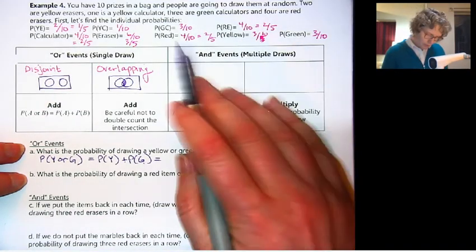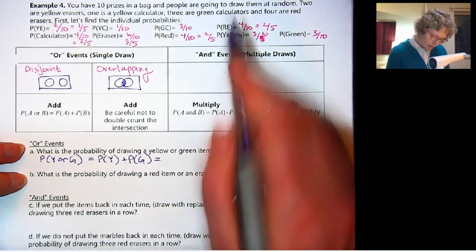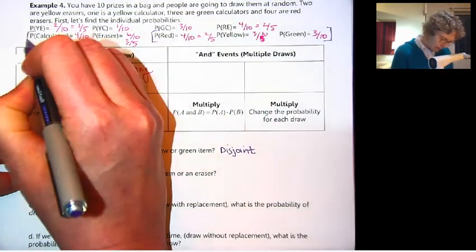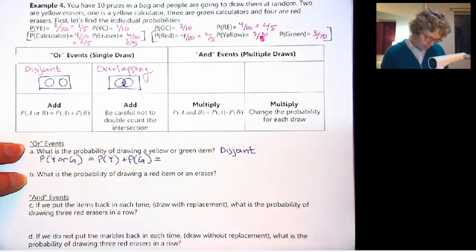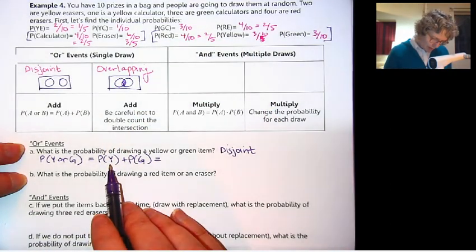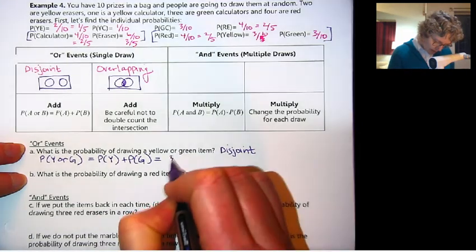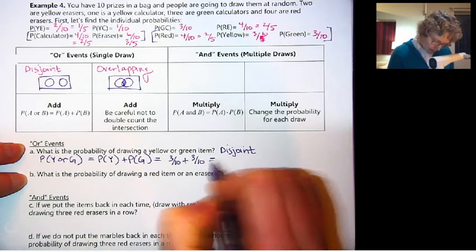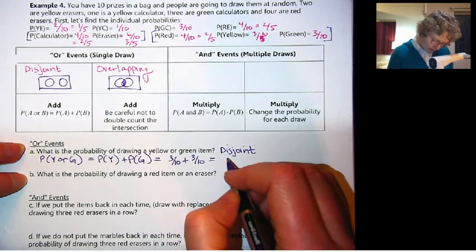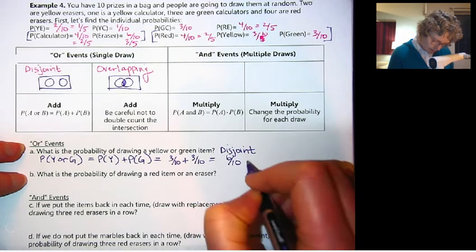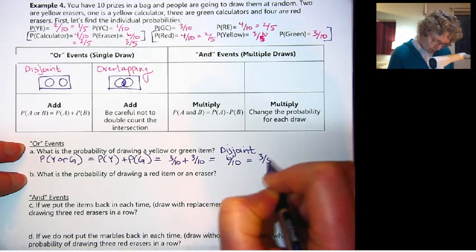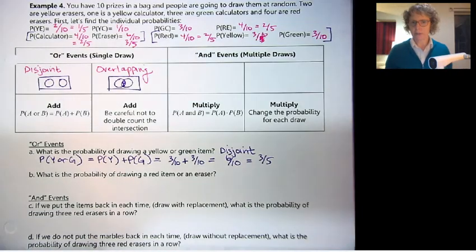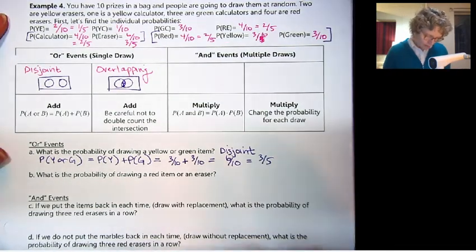What's the probability of drawing a yellow or green item? Yellow or green, these are disjoint. An item can be yellow or green, but it can't be both. There's no overlap in this situation. So that means we can add the probability of yellow plus the probability of green.